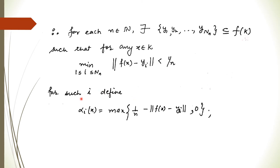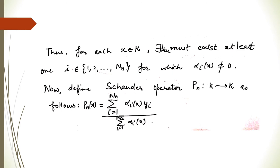For each N we define a sequence α_i(X) = max(1/N − ‖F(X) − Yi‖, 0). This gives α_i(X) ≥ 0. For each X in K there must exist at least one i for which α_i(X) is non-zero, because ‖F(X) − Yi‖ < 1/N strictly for at least one i, making 1/N minus that norm strictly greater than zero.